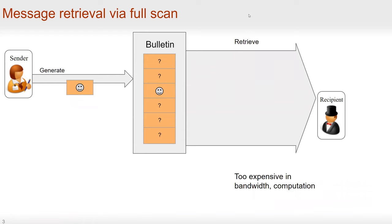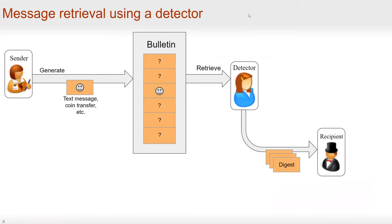Naively, the recipient can simply download the whole database and then distill it locally, but this can be too expensive in both bandwidth and computation. Alternatively, we can introduce a third party, which we call a detector. The detector will hold the board, help the recipient distill the board, collect some digest, and send it back to the recipients containing the pertinent messages.